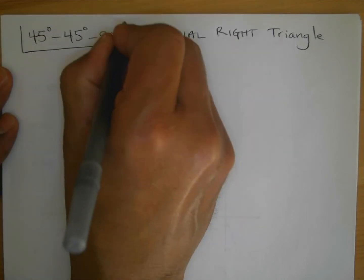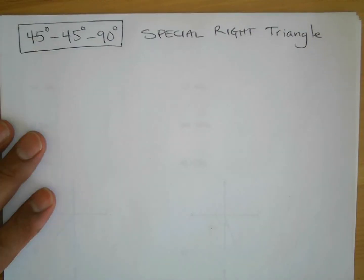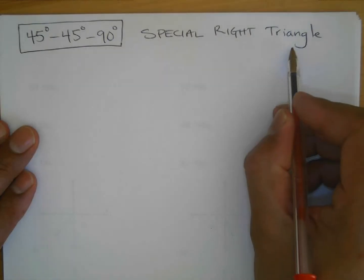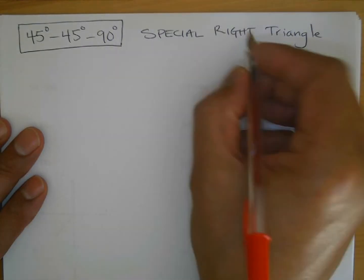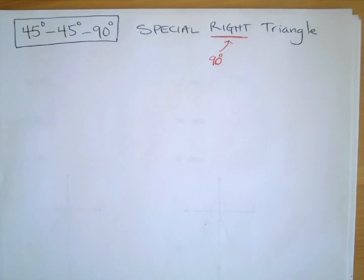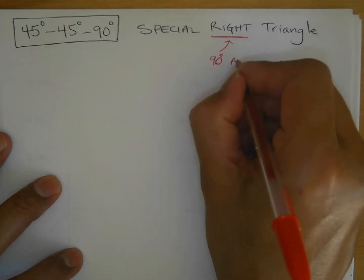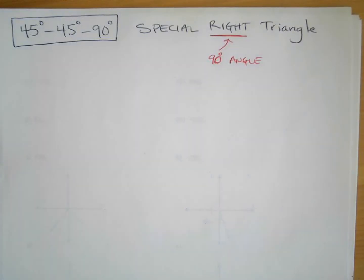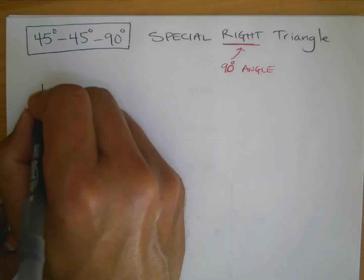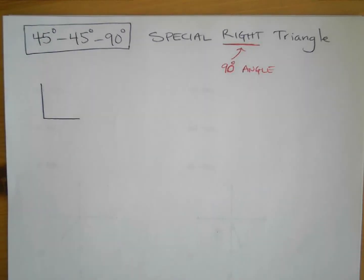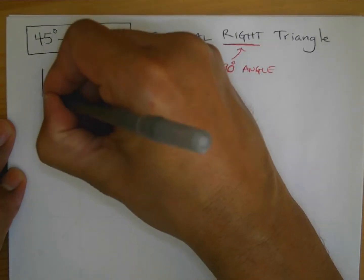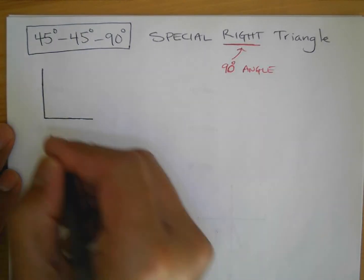For the 45-45-90 degree triangle, let's talk about what this means. We know that a triangle is obviously a closed geometric shape with three sides. The fact that it's a right triangle tells you that it has a 90-degree angle. So it's going to look like this — it's going to have a 90-degree angle right here.